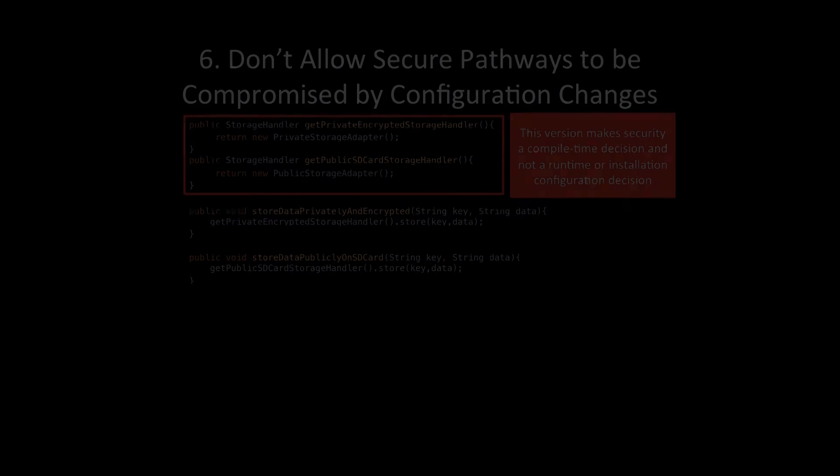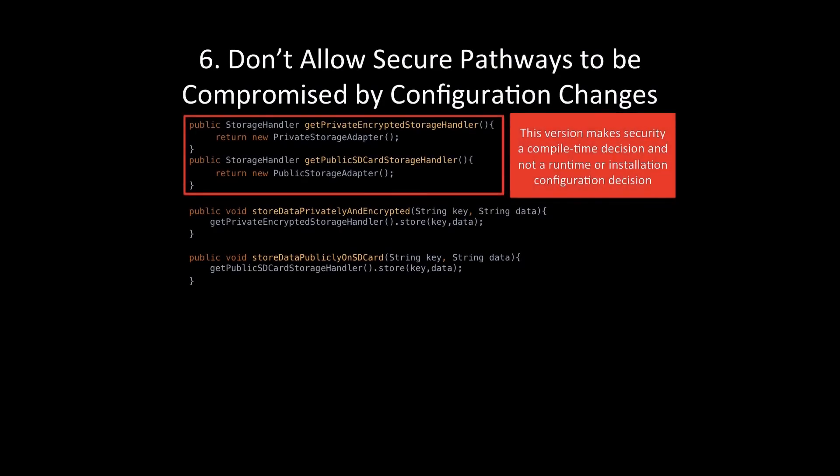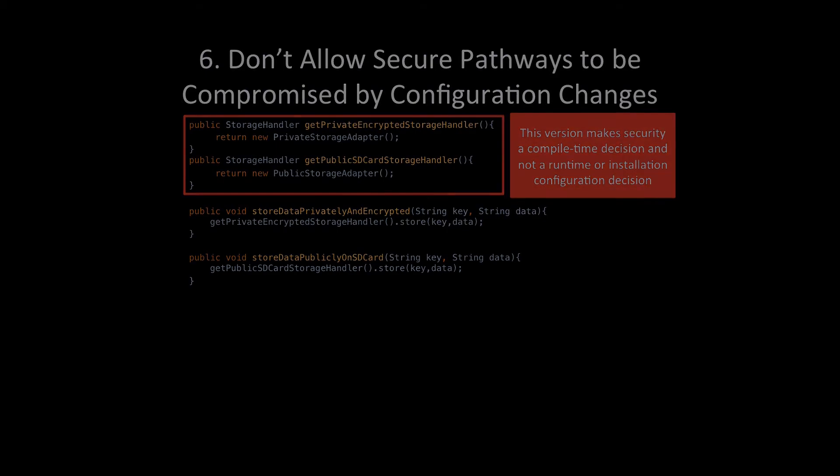We want pathways that are secure at compile time, with unit tests and other tests applied to ensure they're always exercised correctly and always provide the security guarantees we need. By directly instantiating the appropriate handler, this design change greatly improves our trust in these security pathways, since they're no longer exposed to configuration errors.